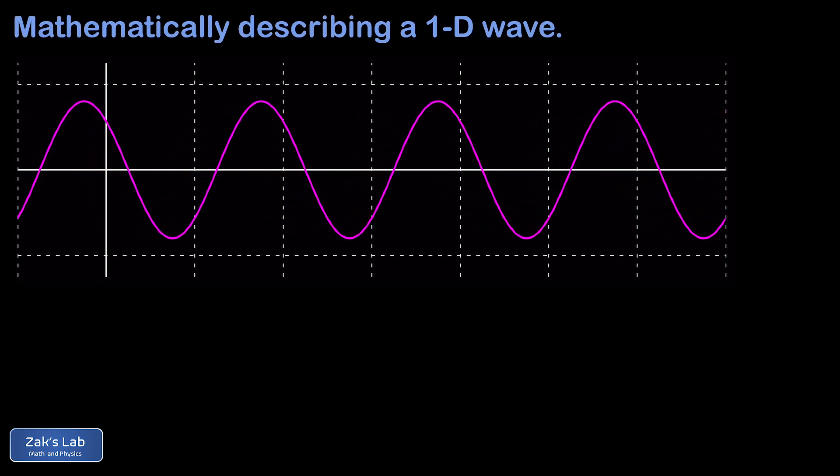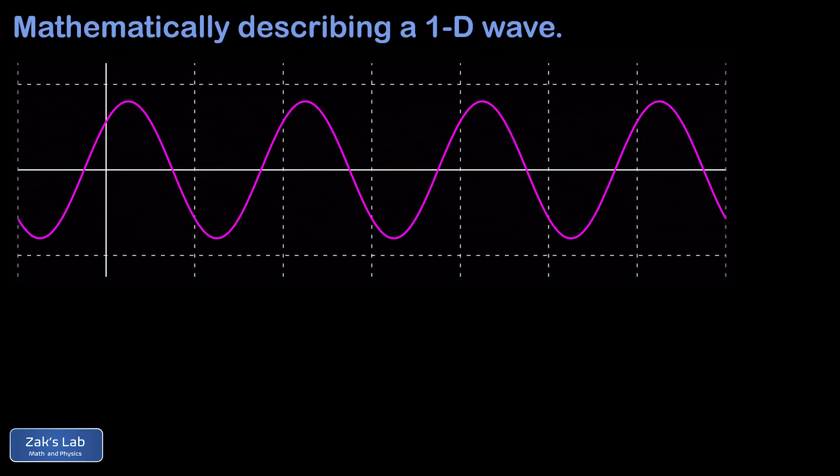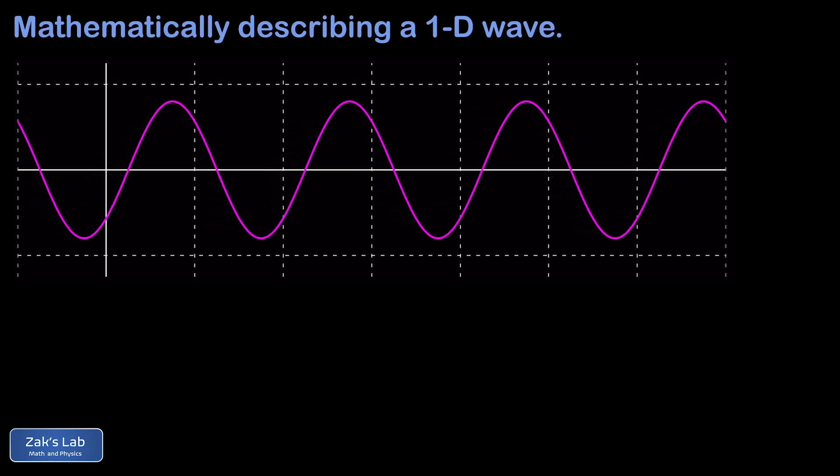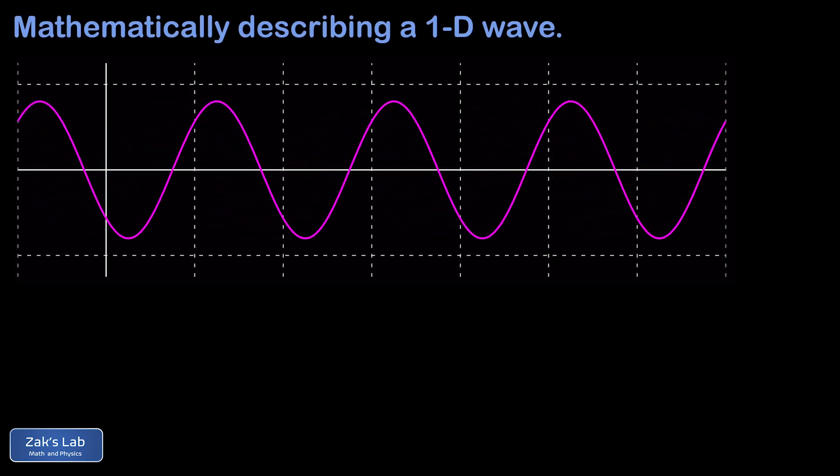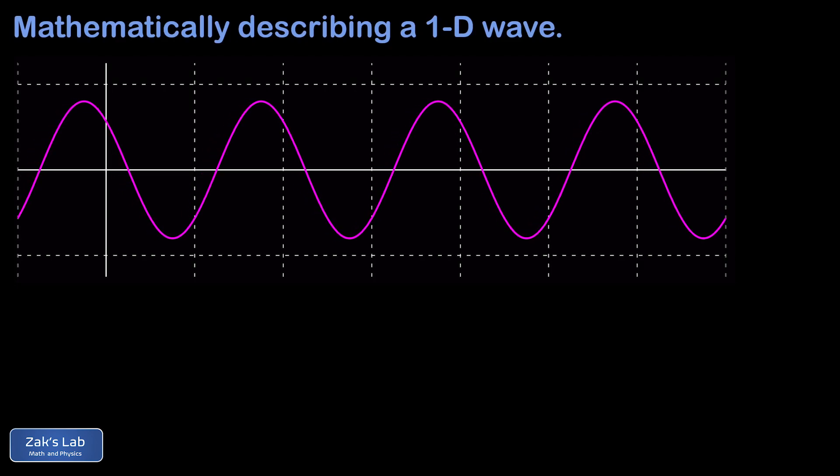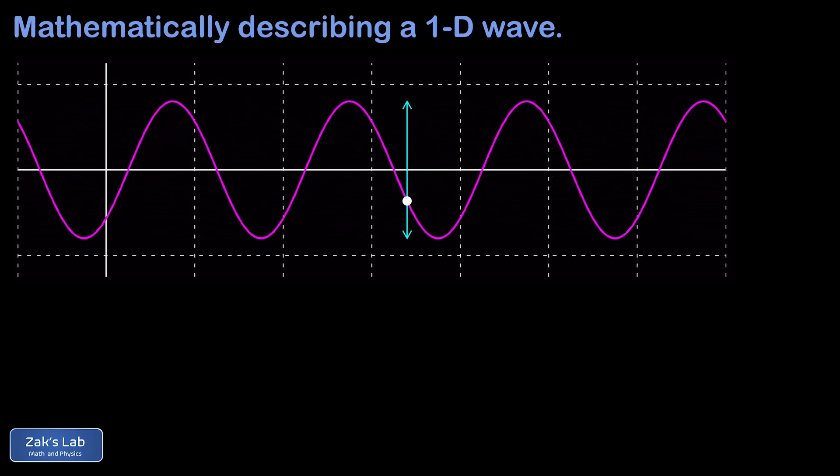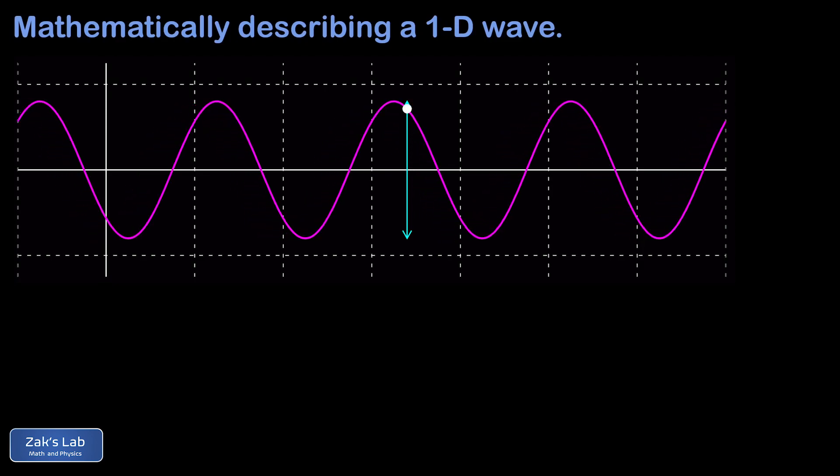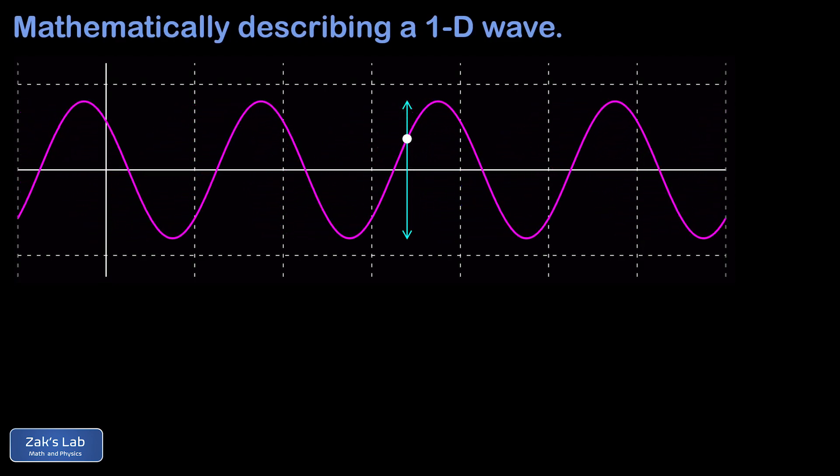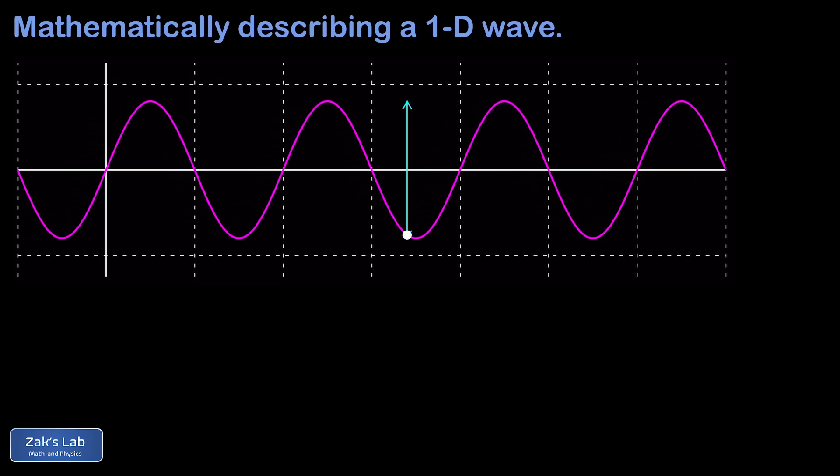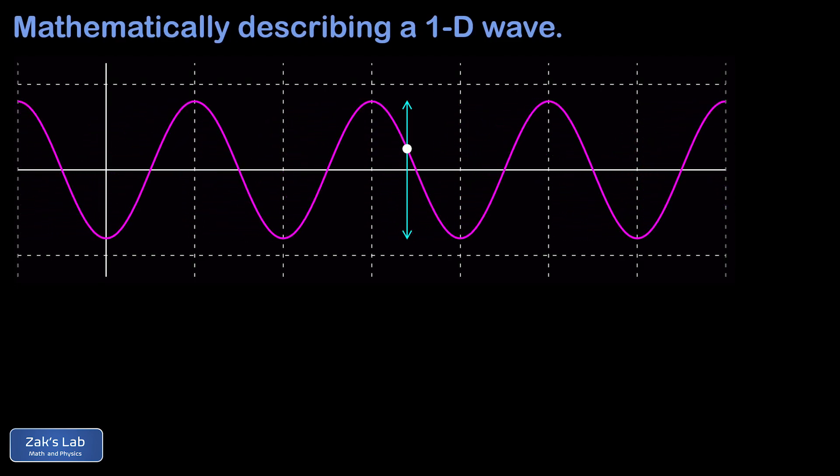Before we get started, I just want to give a quick reminder that what we mean by a transverse wave is that the motion of the medium itself is perpendicular to the direction of wave velocity. So if we highlight some arbitrary point on the string, we see that it moves in simple harmonic motion perpendicular to the direction of the wave velocity, and the period of that oscillation is the same for any point on the string.